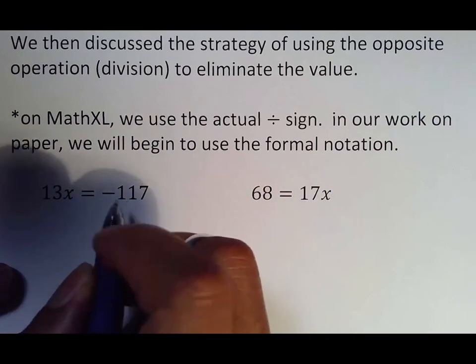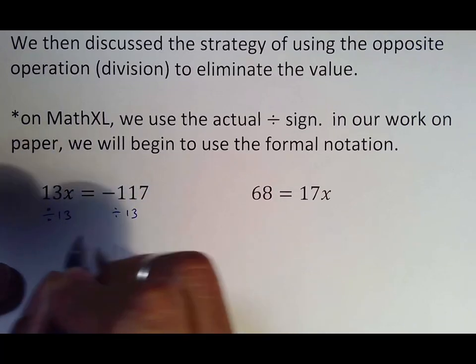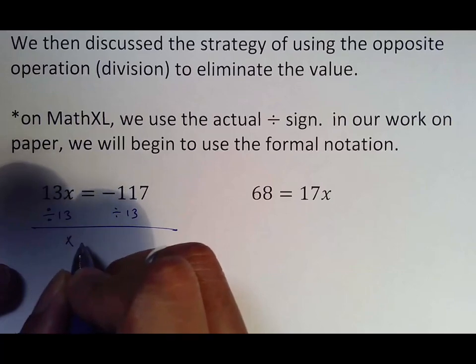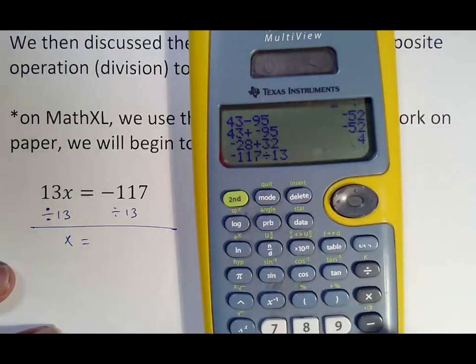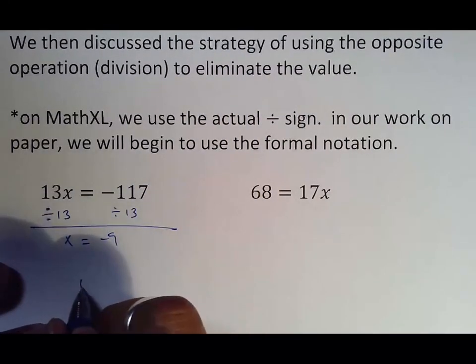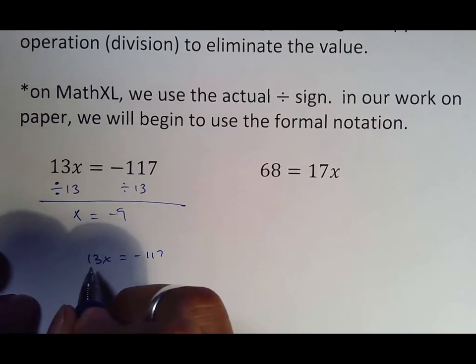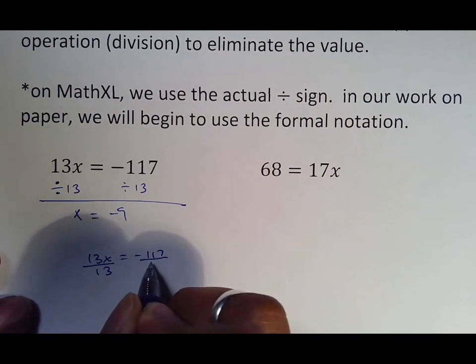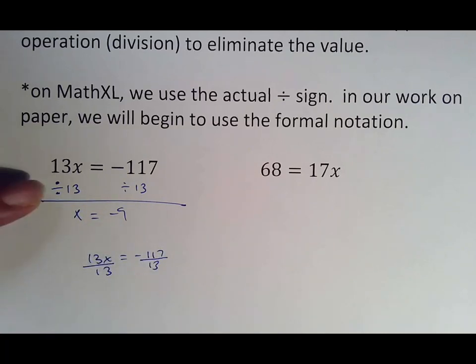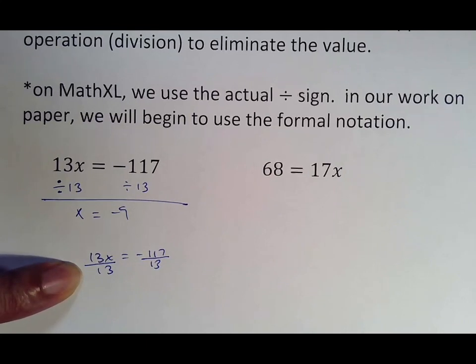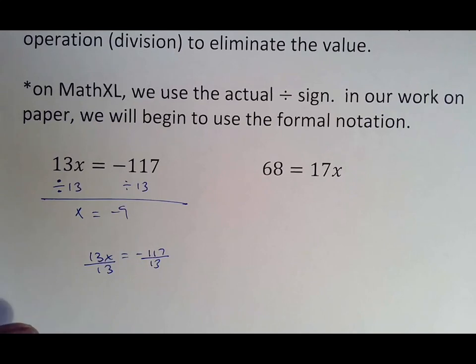So this is 13 times X equals negative 117. On MathXL, you'll put divided by 13 divided by 13, bringing down the X and figuring out what negative 117 divided by 13 is, which is negative 9. Now on paper, as you keep moving forward, you will just simply put divided by 13 divided by 13. That's the formal way to do it. But you can't really show that on MathXL, so we use the division sign, but you usually see it written this way. Just make sure on MathXL, you know you have to use the division sign.